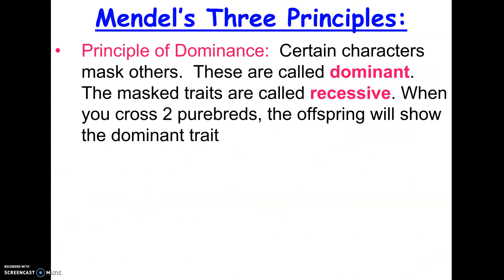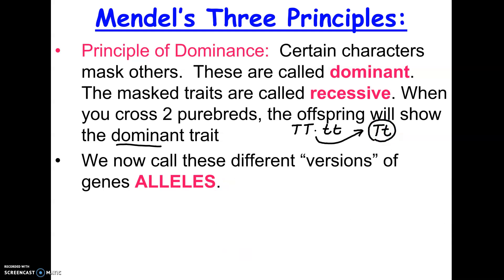From this work, Mendel came up with three principles. His first principle is called the principle of dominance. It basically says some traits mask or cover up others — we call those dominant, and we call the ones that get masked recessive. Whenever you cross two purebreds, you'll know which trait is dominant because the offspring will show the dominant trait. In his cross, big T big T crossed with little t little t produced offspring that all came out tall, and they were big T, little t.